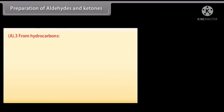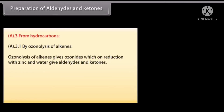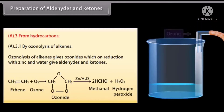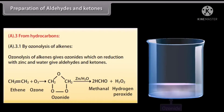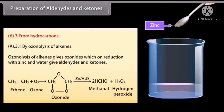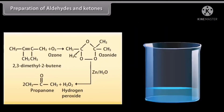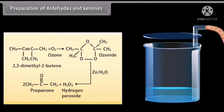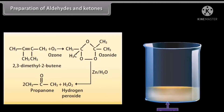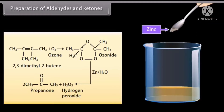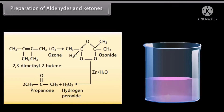From hydrocarbons, by ozonolysis of alkenes: ozonolysis of alkenes gives ozonides, which on reduction with zinc and water give aldehydes and ketones. Ozone gas reacts with ethene and forms an intermediate ozonide; zinc and water are then added to give ethanal and hydrogen peroxide. Ozone gas reacts with 2,3-dimethyl-2-butene and forms an ozonide intermediate; zinc and water are added to give propanone and hydrogen peroxide.